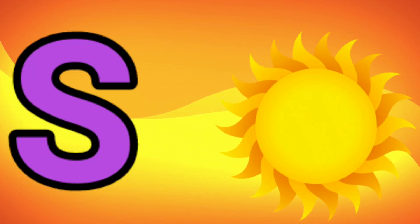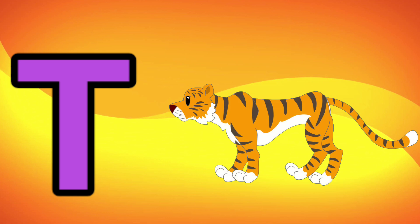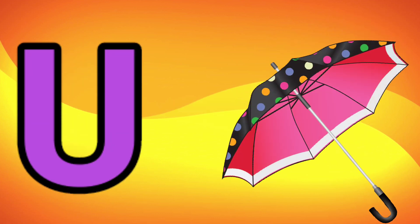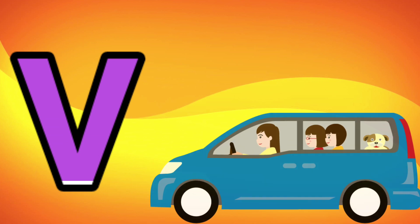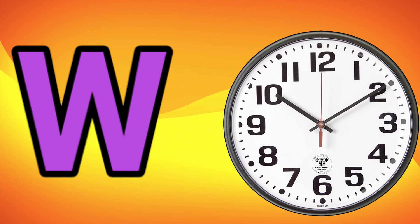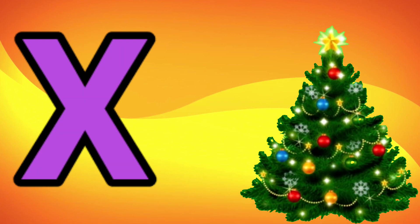S for Sun, T for Tiger, U for Umbrella, V for Van, W for Watch, X for Xylophone.